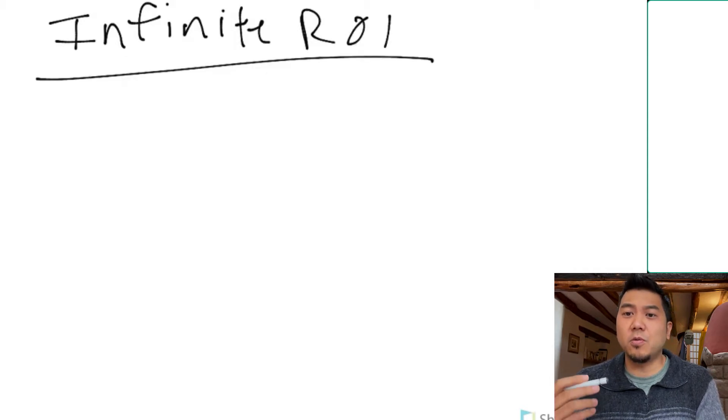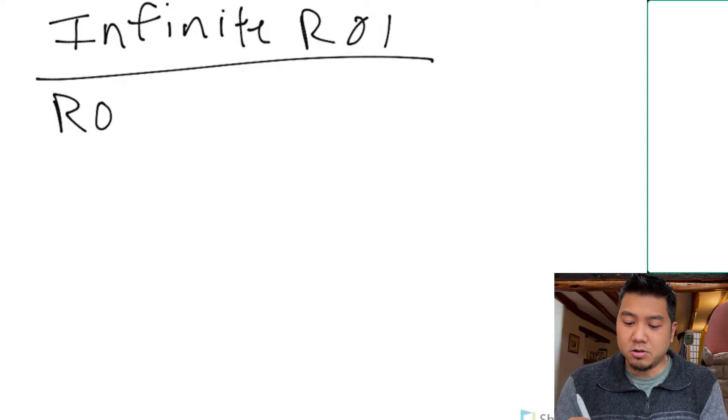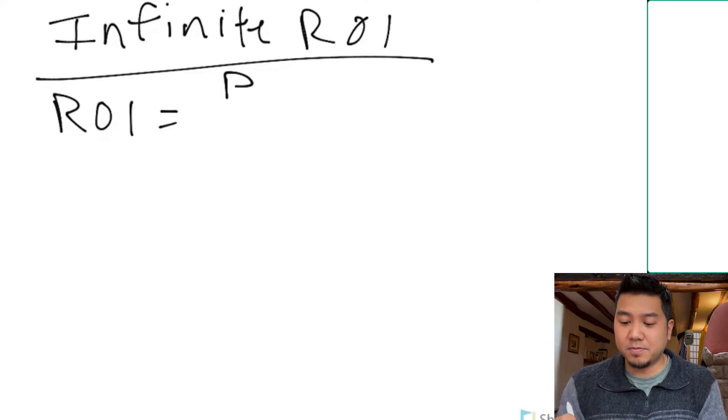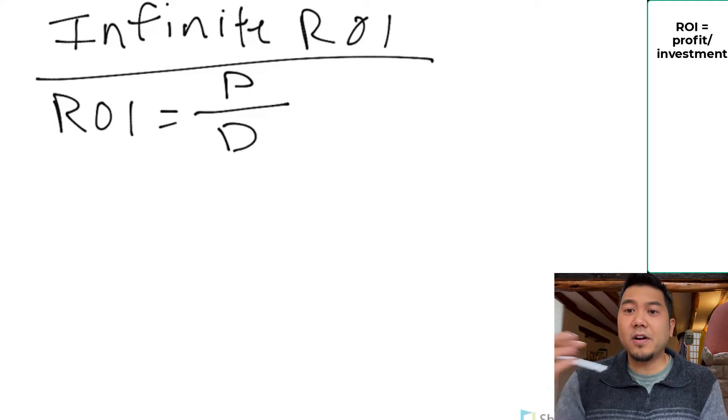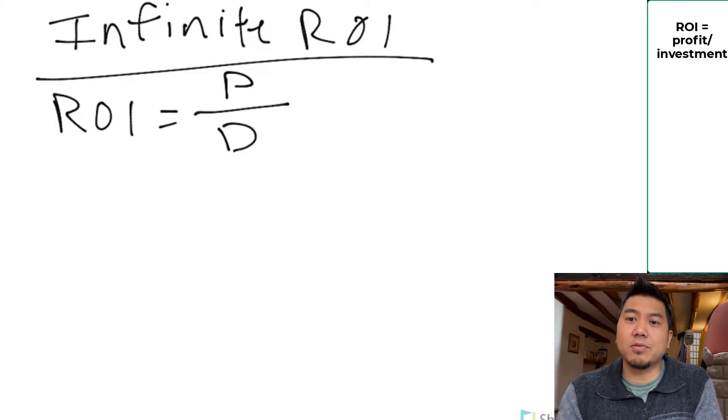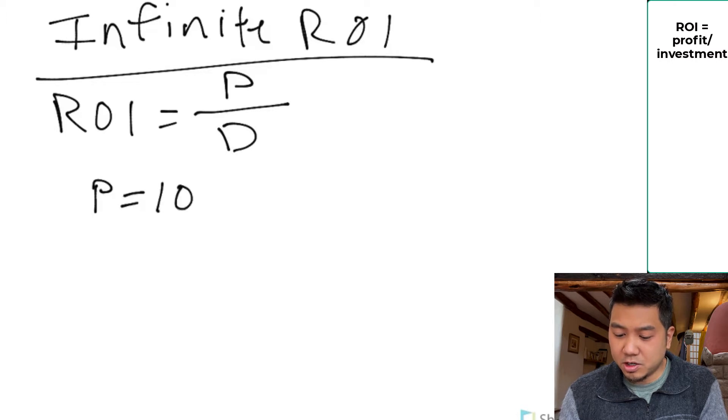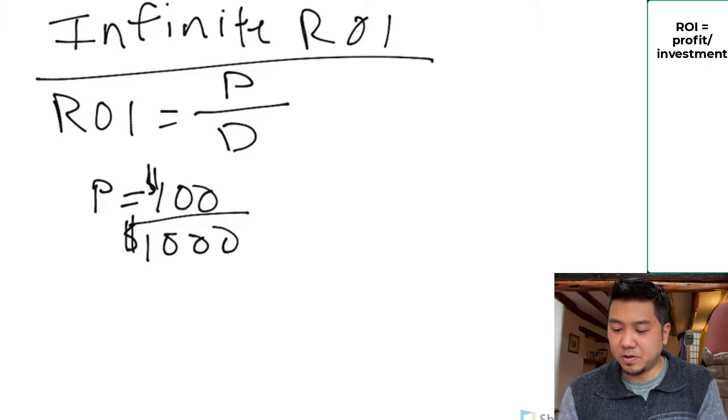Let's refresh on what ROI is. ROI is your return on investment that equals how much the profit is divided by how much money you had to put down to make this happen. So let's just call it our deposit. Very simple example we're going to start with is, let's say you are buying a product for $1,000 and your profit is $100 and you had to put down $1,000 for this.